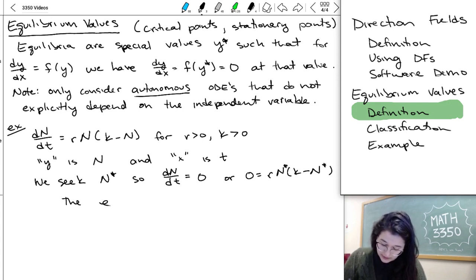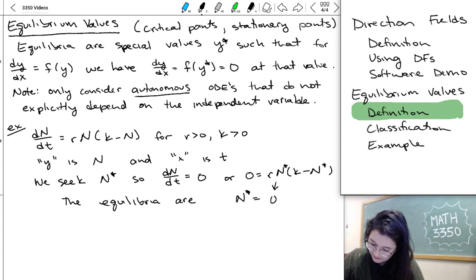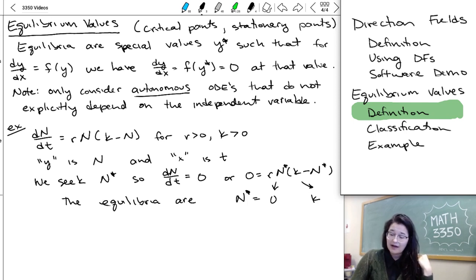So the equilibria are going to be n* equal to either 0 or k. So if we're trying to set this whole equation equal to 0, it's a product of two things. The product of this first thing rn, times the second thing k minus n. And if you want a product to be 0, either of the things you're multiplying has to be 0. So if I want rn to be 0, I need n to be 0. And if I want k minus n to be 0, I need n to be k.